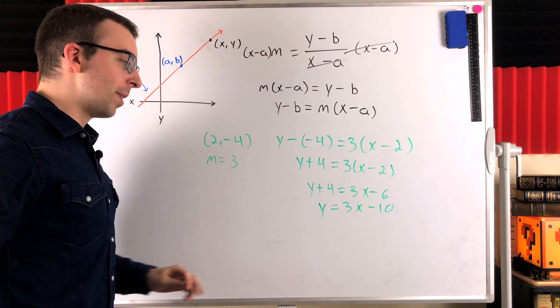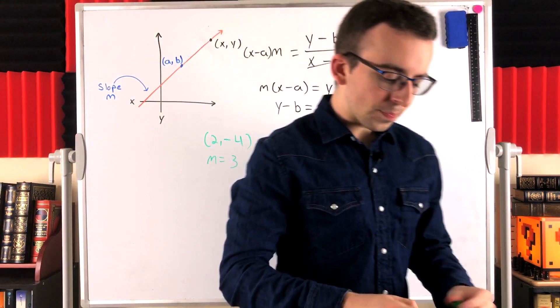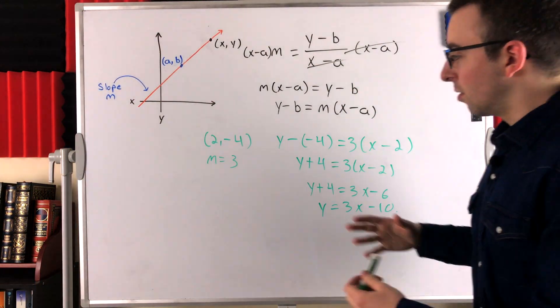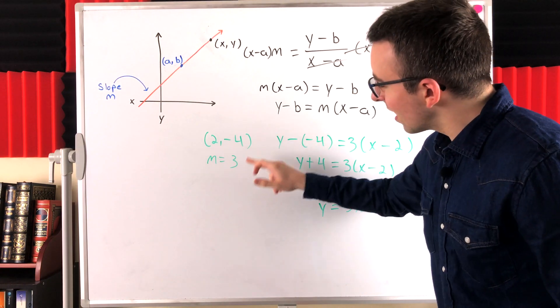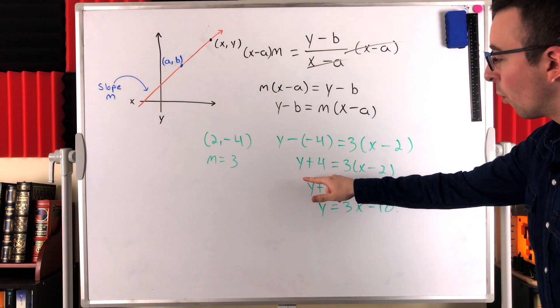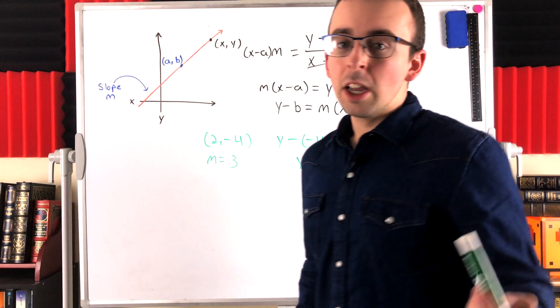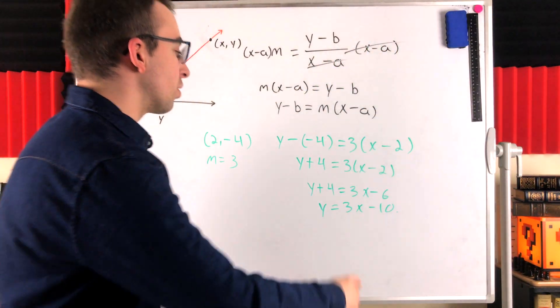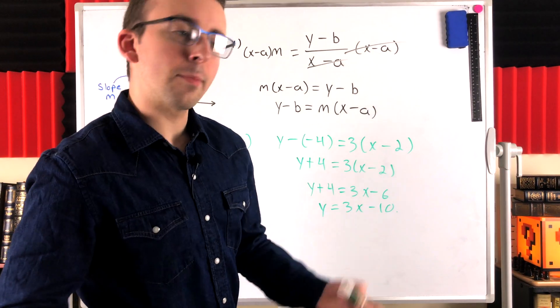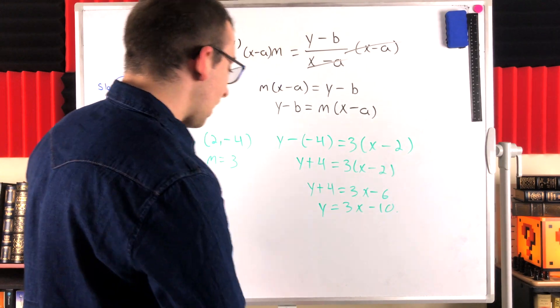So, that's where point-slope form for a line comes from. And you see, it's super cool. If we just got a point and the slope, just like that, we can write our equation of the line, which if we want, we can easily turn into slope-intercept form, which we all really like. And that's it.